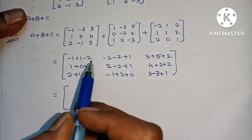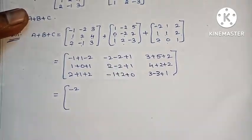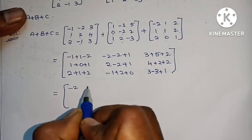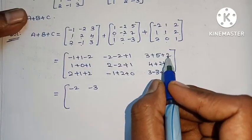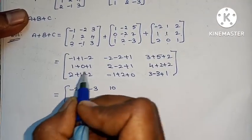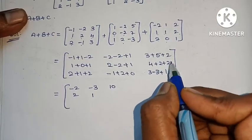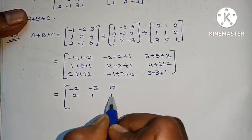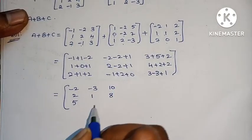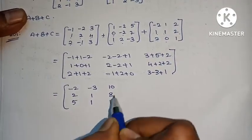Computing the answer: minus 1 plus 1 gives 0; minus 2, minus 2, minus 2, minus 2 gives minus 4; 4 gives 1, that is 3, minus 3. Then: 1 plus 1 is 2, plus 2, minus 2 cancel gives 1; 2 plus 1 gives 3; simple plus, plus 3, minus 3 cancel gives 1.